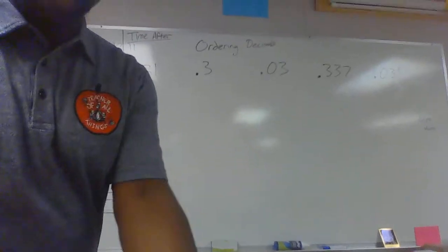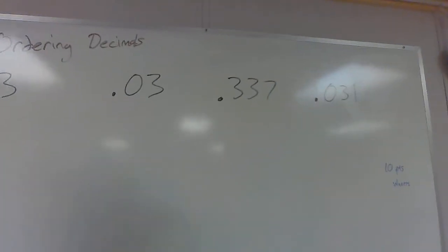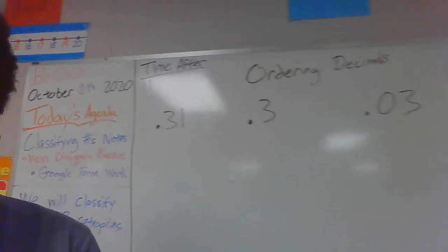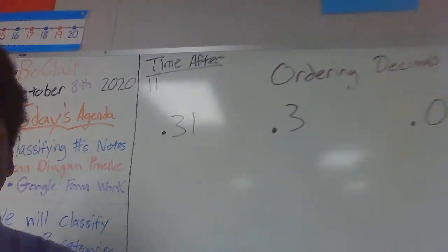When you're ordering decimals, the easiest thing to do to make sure that you put your decimals in order the correct way is actually adding zeros to the end of each value until every single one of these decimal values has the same amount of place value.